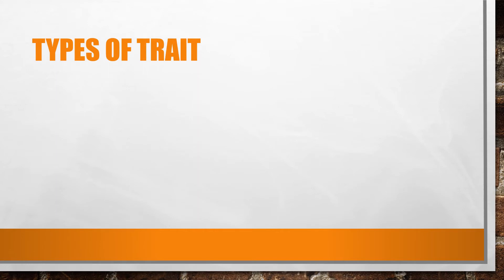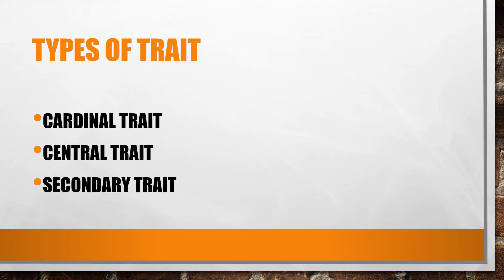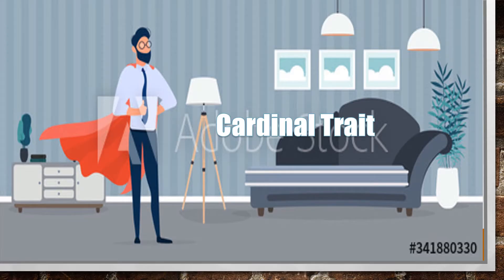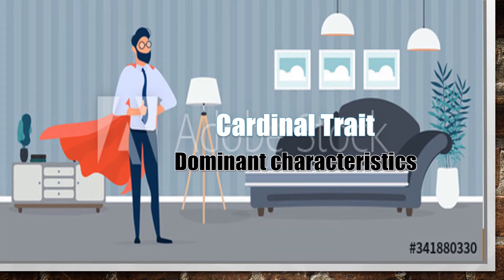Three types of traits have been given by Allport. Cardinal traits are the characteristics that are dominant in a person's life. These are master motives and ruling passions. For example, a person who wants to be powerful will strive to attain a position of power within society, and will even try to dominate his spouse.